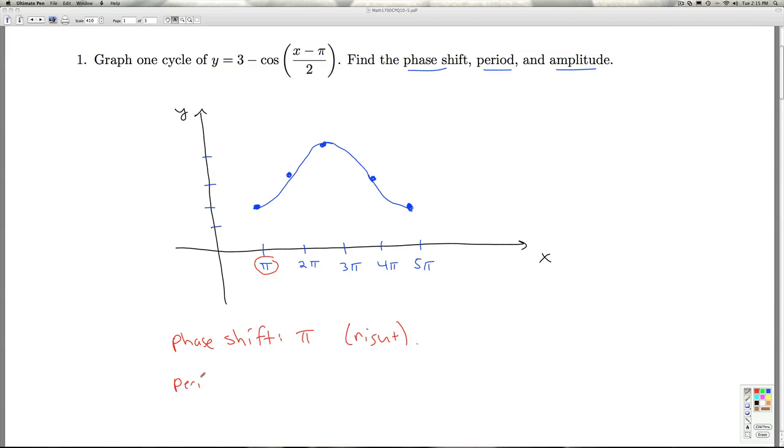For the period, the period is how long it takes for the cycle to repeat itself, or how long it takes to graph one cycle. And I can determine that by looking at the length of this interval. I can get the length of the interval by subtracting the right endpoint minus the left endpoint. So the period here is 4π.